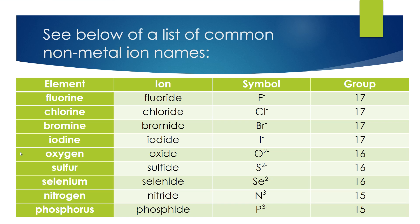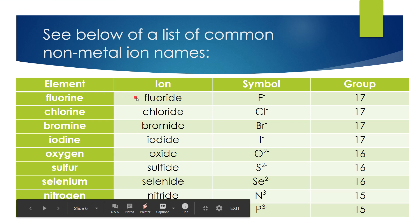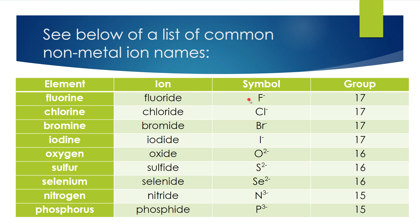You can see the list of common non-metal ions below. Fluorine becomes fluoride — its symbol is F⁻, charge is negative one, and it's in group 17. Chlorine becomes chloride, similarly in group 17. Bromine becomes bromide, iodine becomes iodide, oxygen becomes oxide, sulfur becomes sulfide, selenium becomes selenide, nitrogen becomes nitride, and phosphorus becomes phosphide.